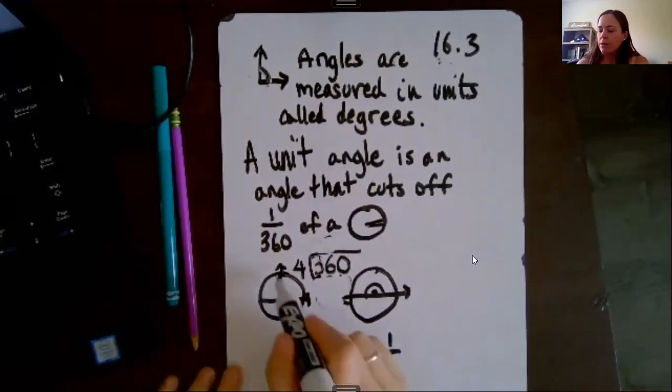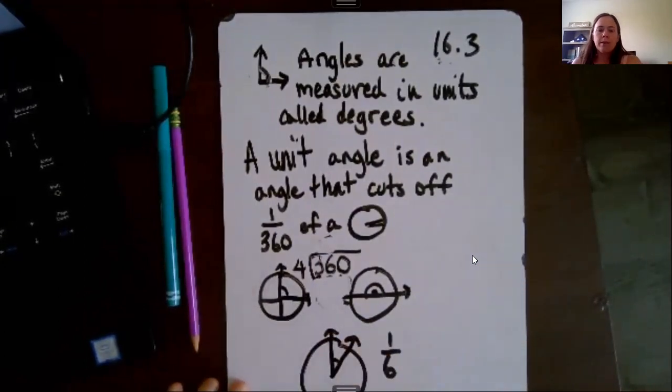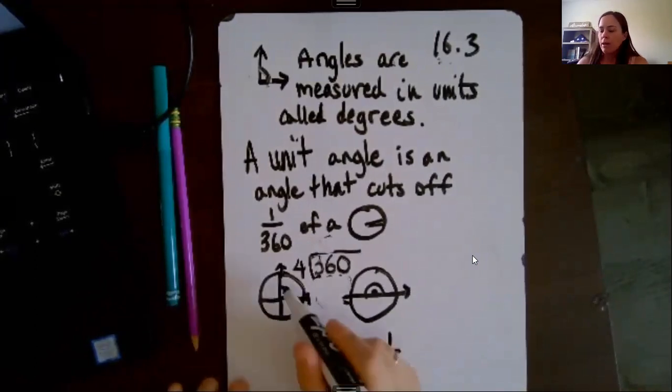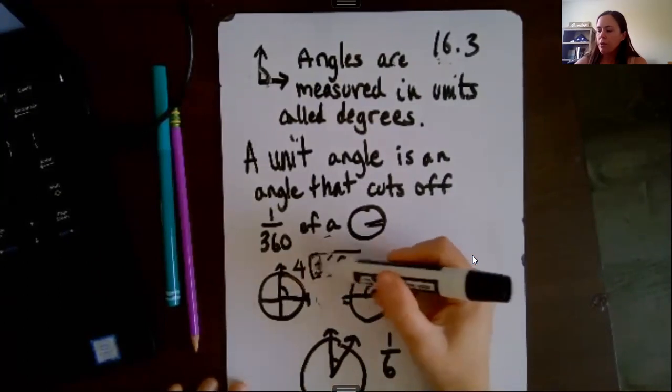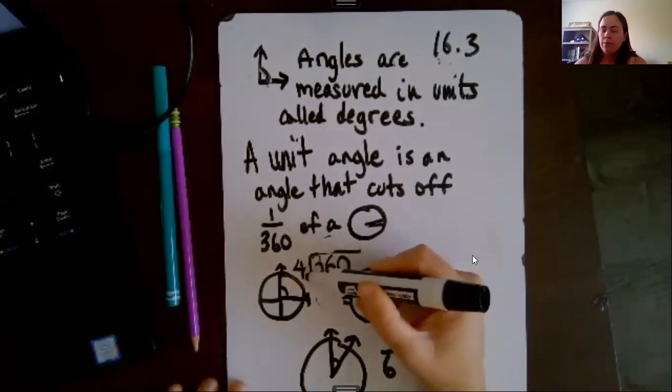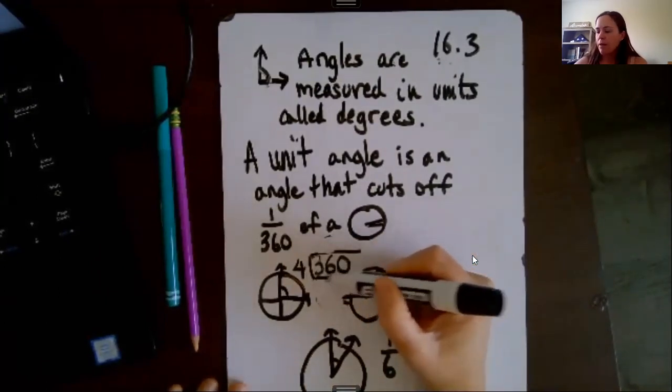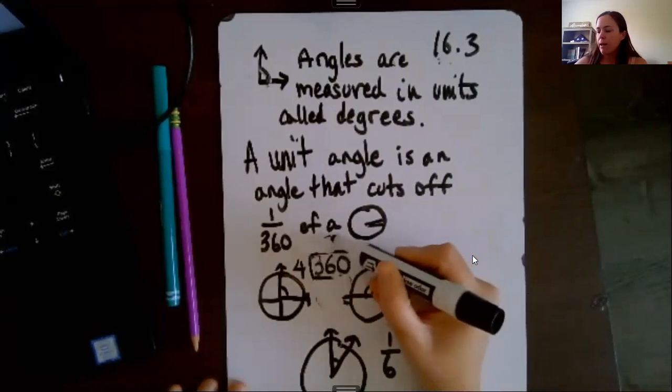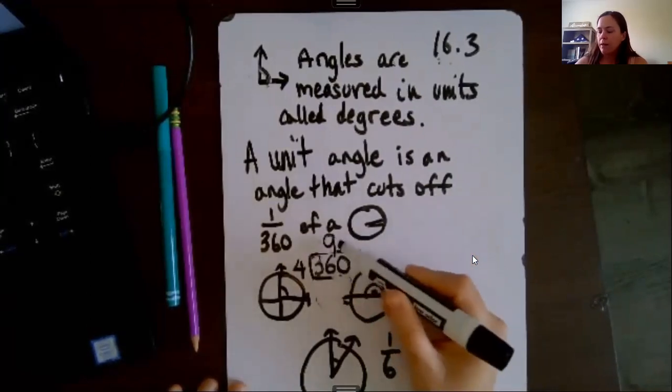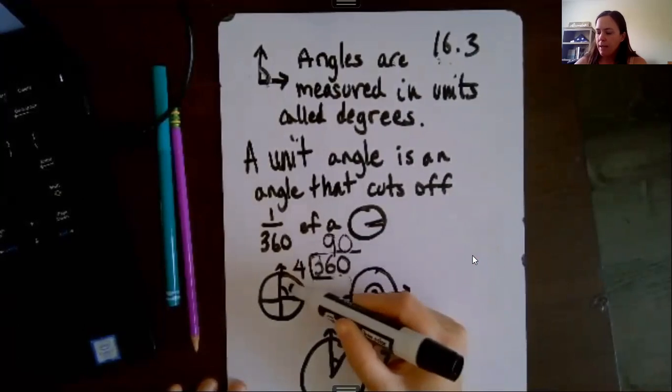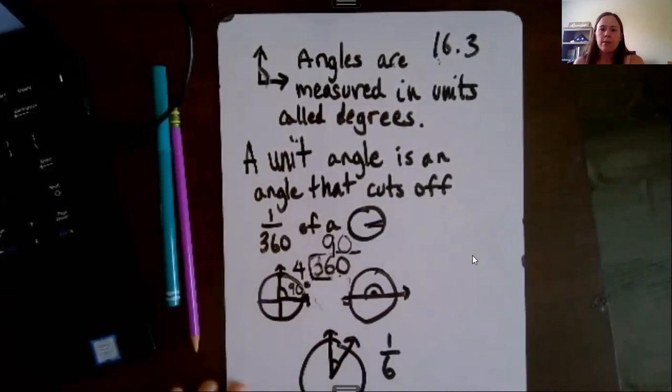So down here I have this one and it's broken up into four pieces. And if you want to know what just this angle is right here, you would do 360 divided by 4, and 36 divided by 4 is 9. And then you would add a zero. So this is a 90-degree angle. And you write it with this little bubble up on top, that's a degree symbol.